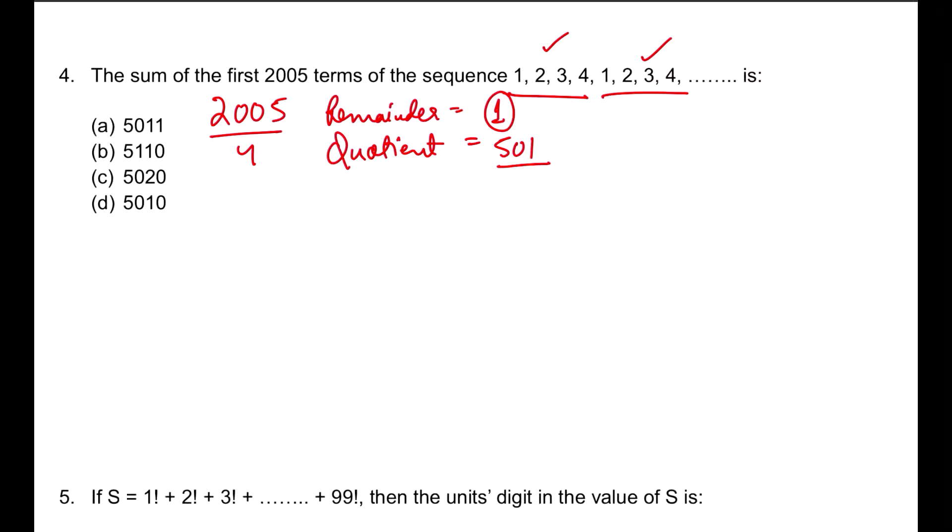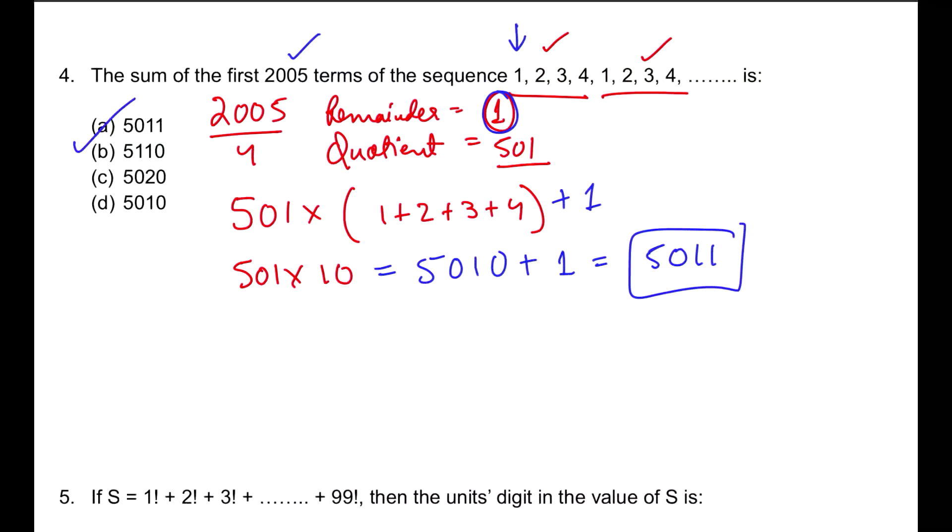Why did I find the quotient and remainder? Because the quotient tells me how many times 1+2+3+4 repeats. 501 times this series is getting repeated. The sum of 1+2+3+4 is 10, so 501×10 is going to be the sum. But there is one remainder, meaning there will be an extra 1. The first term is 1, so add this to your answer: 5010+1=5011. So the answer is option A.